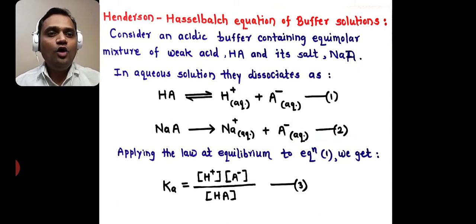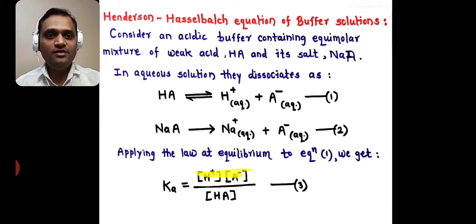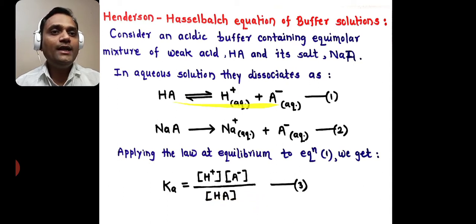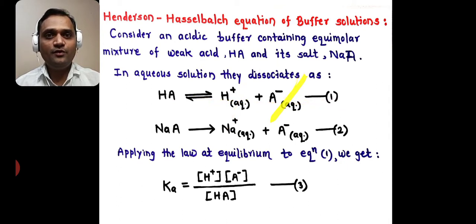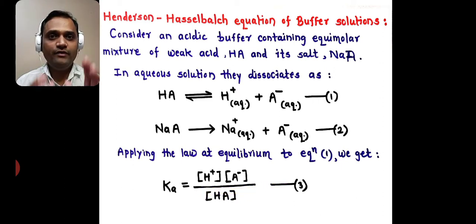Now, applying the law of equilibrium to equation 1, we get Ka, the equilibrium constant, equal to the product of molar concentrations of products divided by molar concentration of reactants. So Ka = [H⁺][A⁻] / [HA]. This is equation 3.